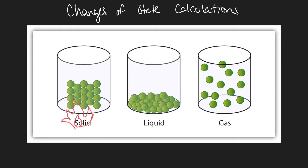They have a lot more energy and they're able to move more. If it has just enough energy, the particles will start to break free from one another, and then the process of melting takes place. Melting is the process where a solid becomes a liquid. This process we officially call the heat of fusion — heat of fusion and melting are the same thing.